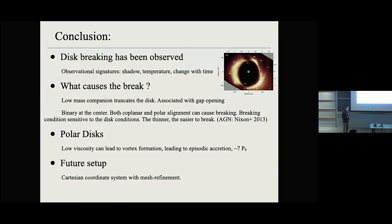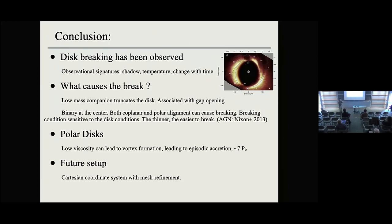Question from the audience: Can you say a little more about the vortex formation? Is it the Rossby wave instability or something else? It seems like it doesn't have the characteristic m=5 mode that the RWI has, but an m=2 mode. Response: The m=2 mode is basically because the binary has two spirals — a very strong m=2 mode disturbance to the disk. So you start with m=2, but they later merge the same way as in the vortex merging seen elsewhere. The edge is indeed Rossby wave unstable.